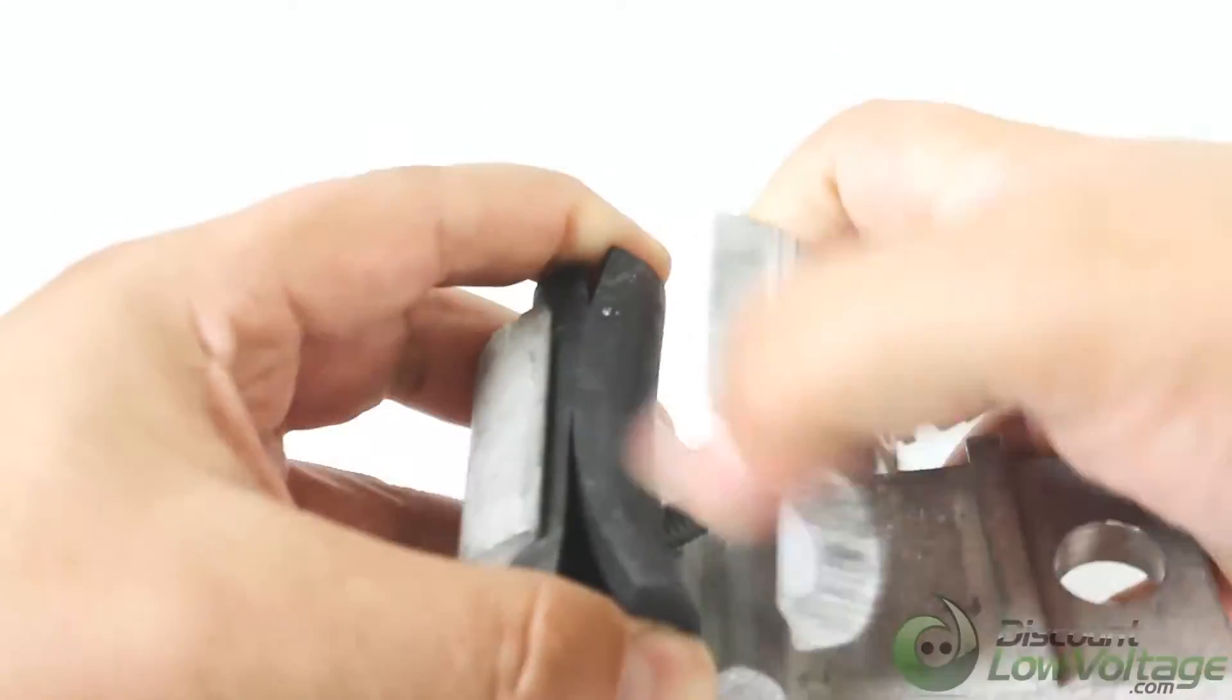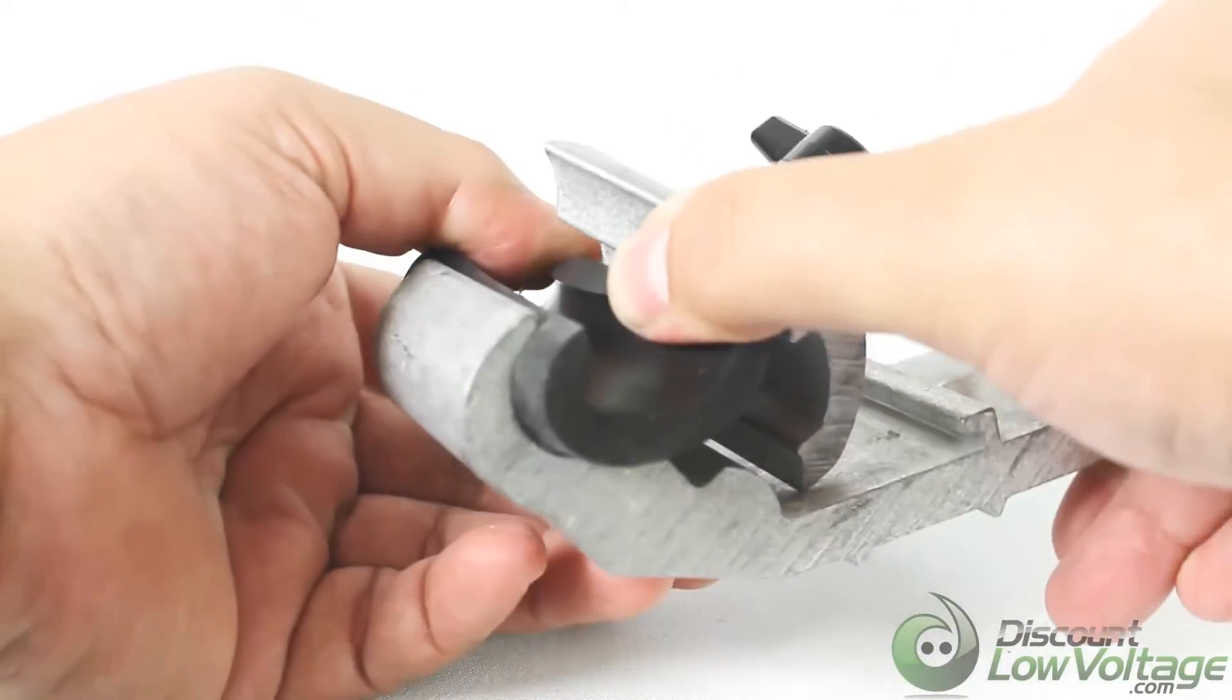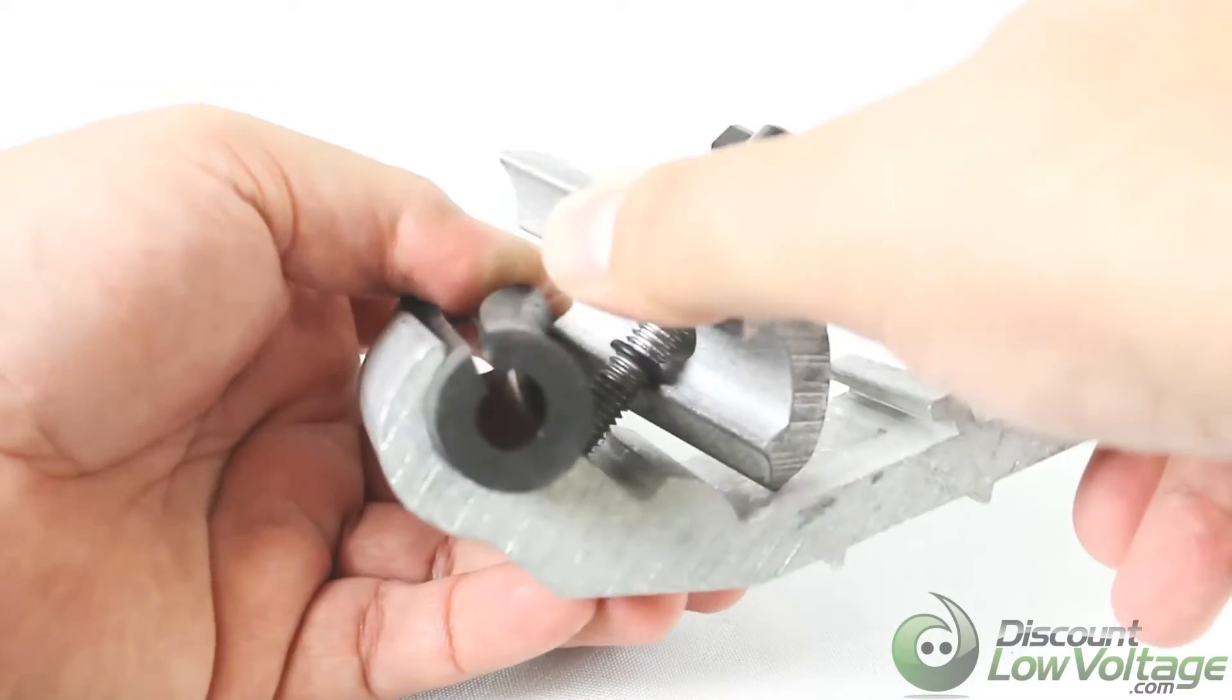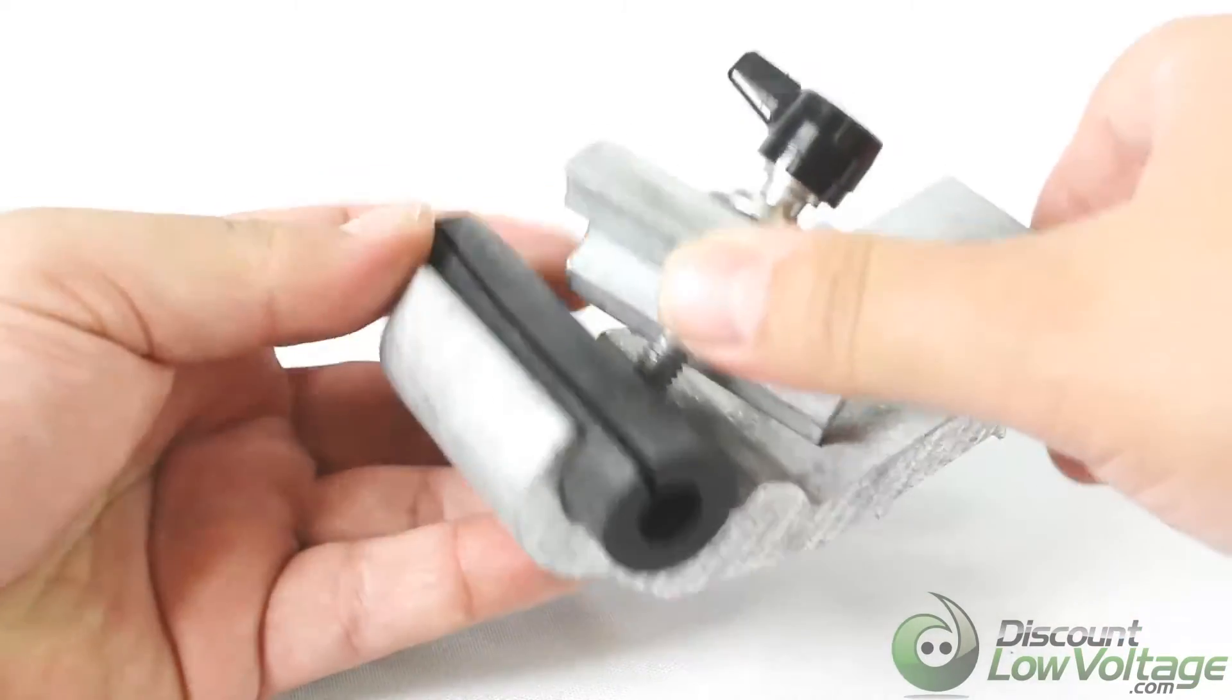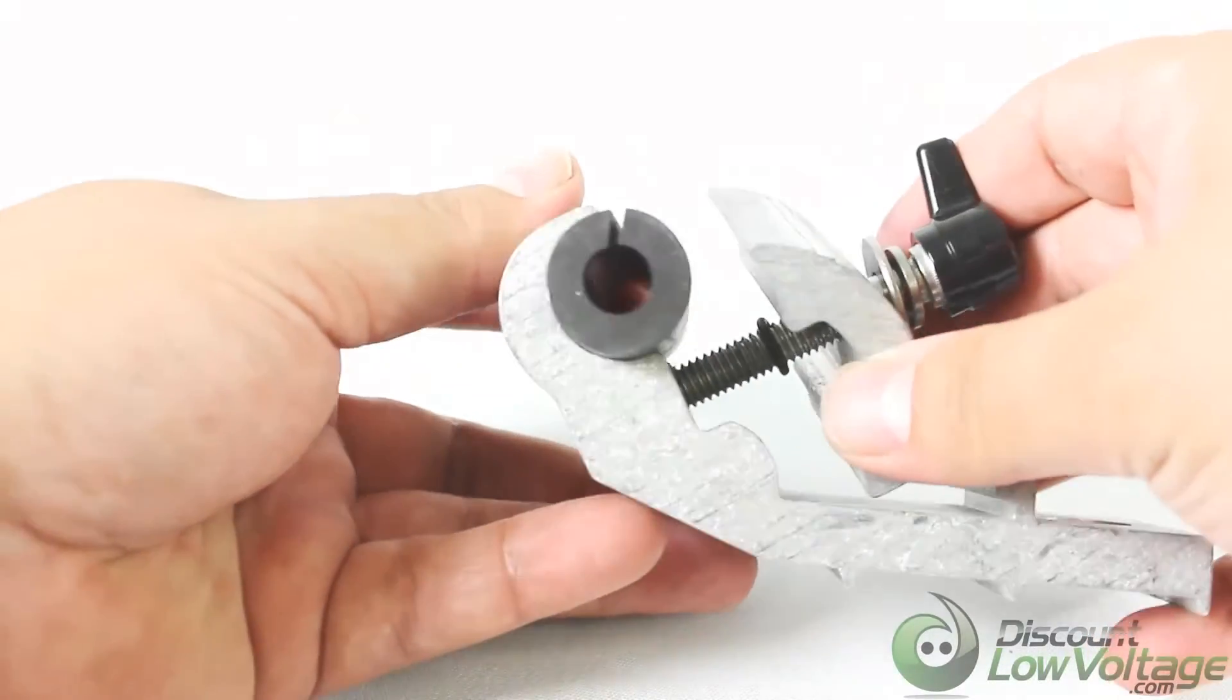This would be the other piece where your fiber optic cable would go into. It's kind of a rubberized weatherproof type of hose.